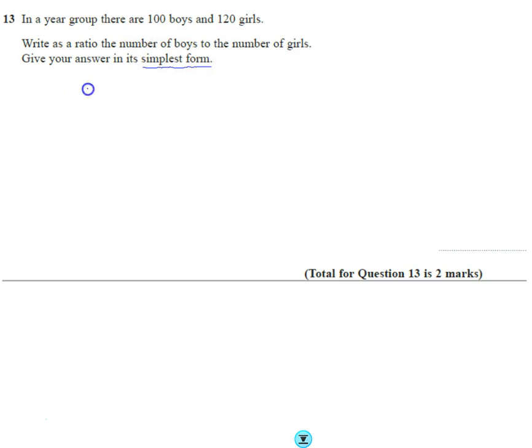So the ratio is going to have boys first, it's going to have girls second. So let's just put the full numbers in, we've got 100 boys and we've got 120 girls, so we just simplify it.